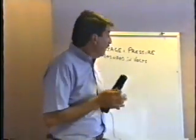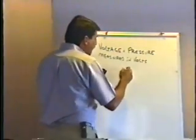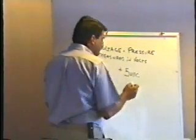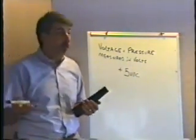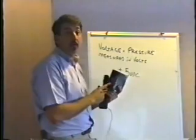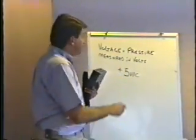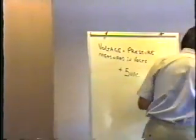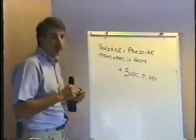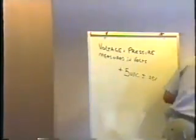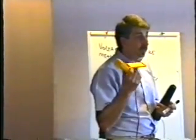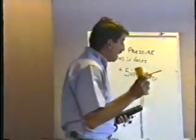Almost every integrated circuit in every game you work on requires five volts DC to operate. Most of you are probably familiar with this because your power supply has a five-volt output. This is very critical — the five volts DC can only vary plus or minus a quarter of a volt before we start to see problems. That's one of the main reasons you want a digital multimeter, so you can check it accurately.